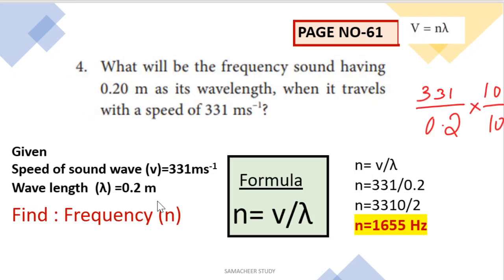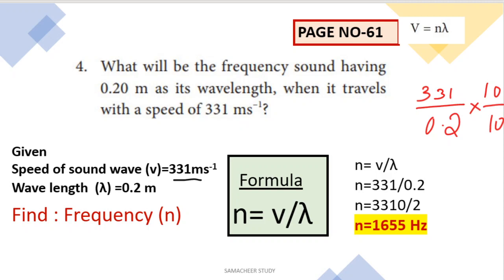Next question — one simple problem: what will be the frequency of a sound wave having 0.2 meter as its wavelength when it travels with a speed of 331 meters per second? Given values: speed V = 331 m/s, wavelength lambda = 0.2 meter. We need to find the frequency.